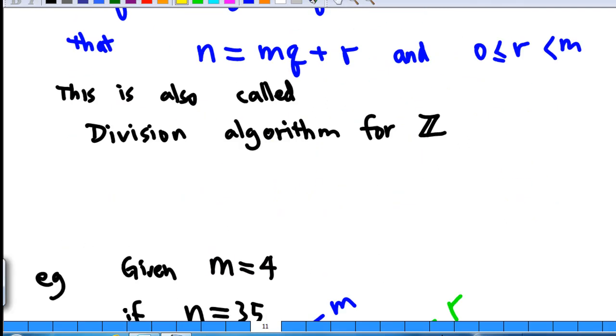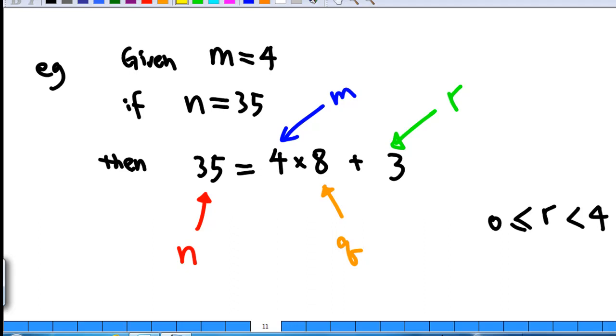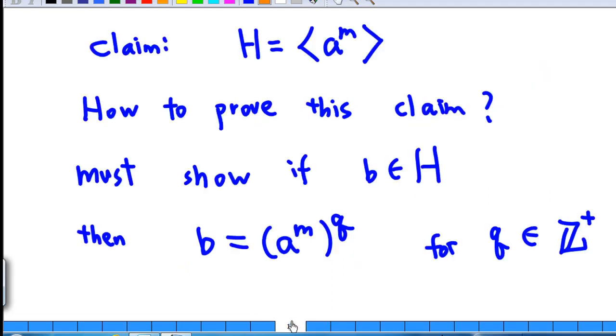How do we make sense of this? For example, if m equals 4 and n equals 35, then if we divide 35 by 4, we will know that 35 equals 4 times 8 with remainder 3, where we call r the remainder and q the quotient. Notice that the remainder is always less than m. So r equals 3, which is less than 4 and greater than or equal to zero.